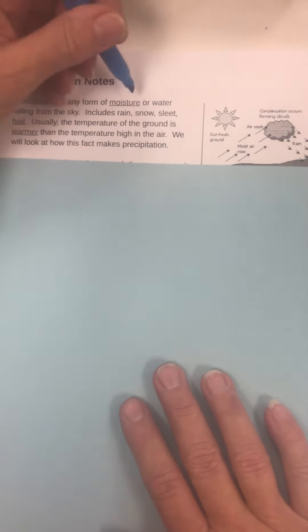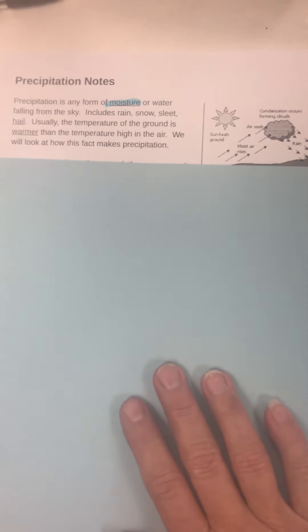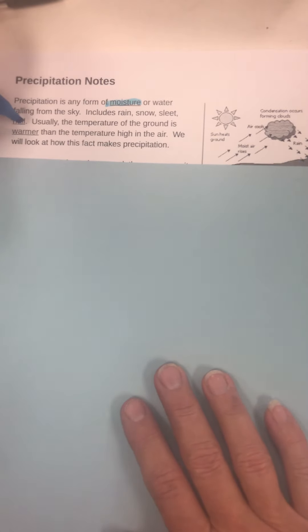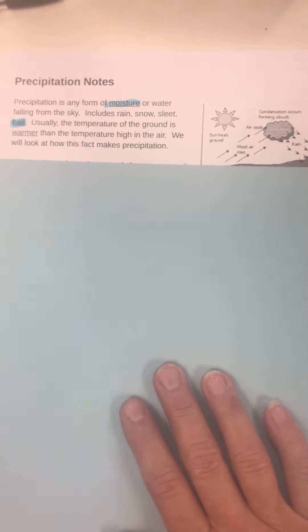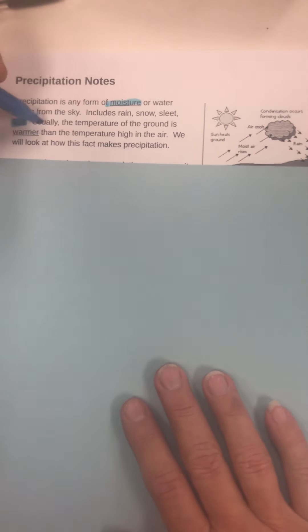So, precipitation. Precipitation is any form of moisture or water falling from the sky. This includes rain, snow, sleet, or hail. Usually, the temperature of the ground is warmer than the temperature high in the air. We will look at how this fact makes precipitation.